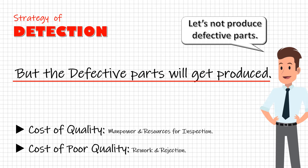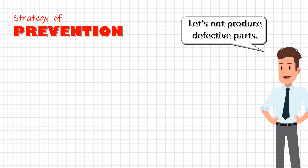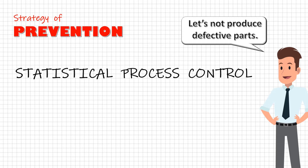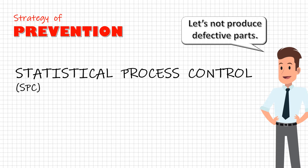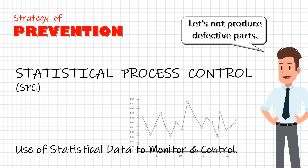A strategy of prevention. One of the methods to implement the prevention strategy is Statistical Process Control. SPC is a tool where we use statistical data to monitor and control a process.